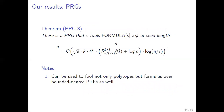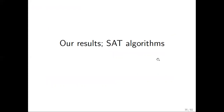We also give the first PRG for formulas of symmetric gates, with a quartic dependence on s and square root dependence on n. Our last PRG is for formulas of functions in some class G, where the seed length depends on the number-on-forehead randomized communication complexity. If this is small enough, the seed length is small enough.